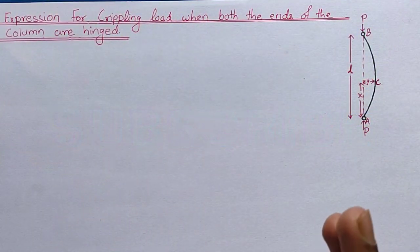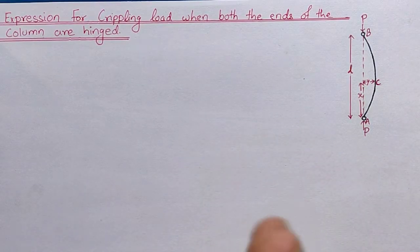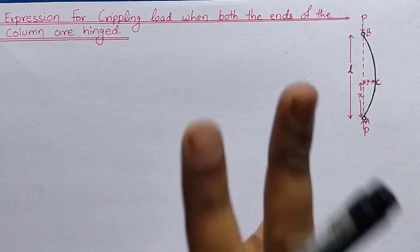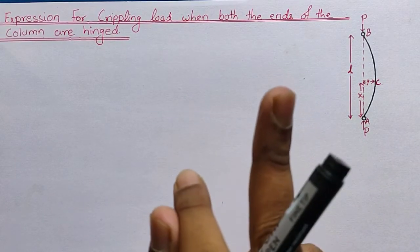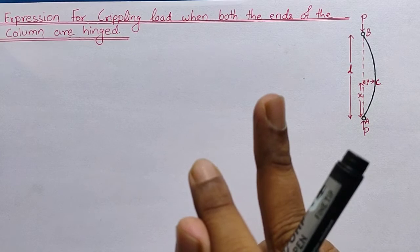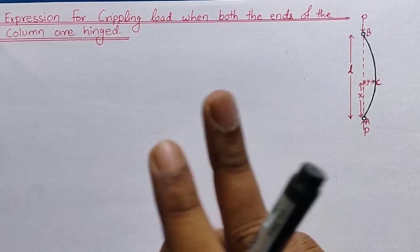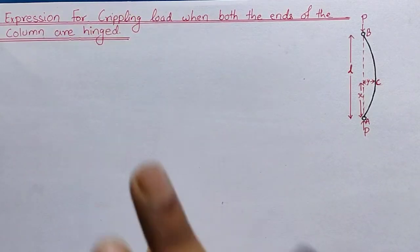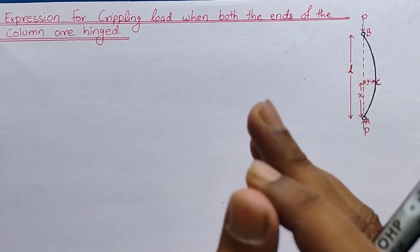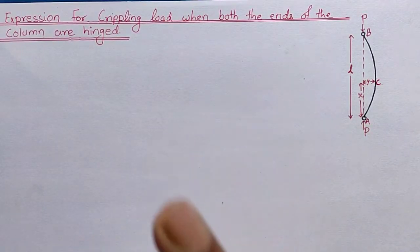Continuing our discussion about deriving an expression for the crippling load, there are two types of column: the short column and the long column. Failure of the short column takes place due to crushing, and failure of the long column takes place by buckling. The crippling load is the load at which the long column bends or fails.